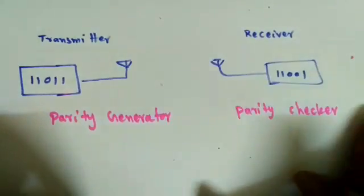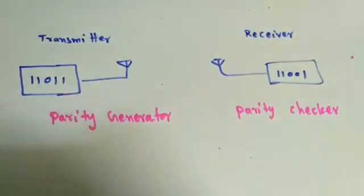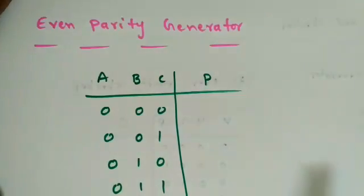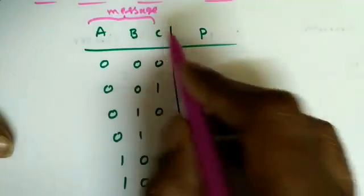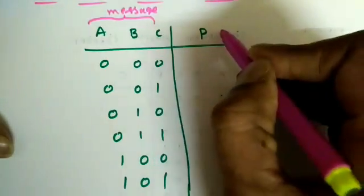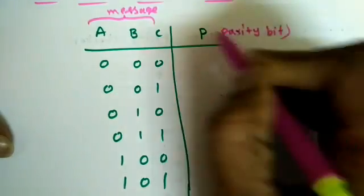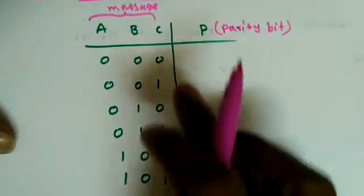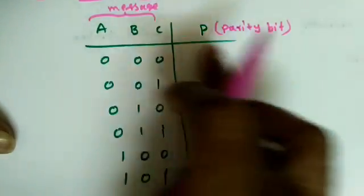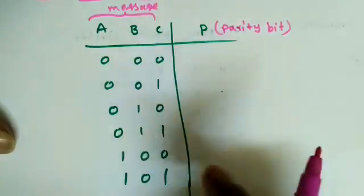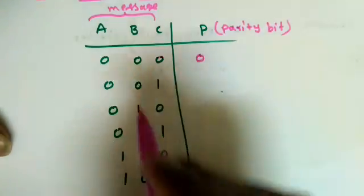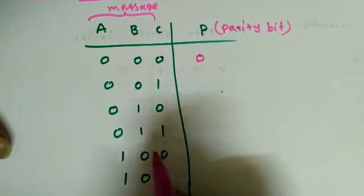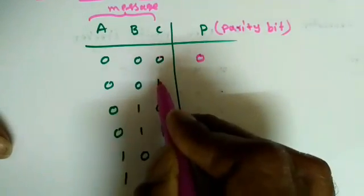Now we will see the even parity generator. Suppose the inputs are three message bits. Apart from the three bits, we add one more bit called the parity bit. The condition for even parity is: including the parity bit, the number of ones present must be even. If all three inputs are zero, to make even we add one more zero as the parity bit.